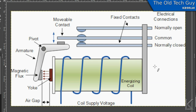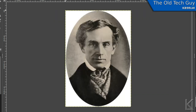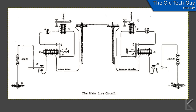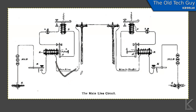Why do we call them relays? Well, we owe that to good old Samuel Morse — father of Morse code, and the father of the modern telegraph system back in the late 1800s. The telegraph system used a code key at each end to operate a magnetic switch, to send a signal down a line to another magnetic switch or sounder.